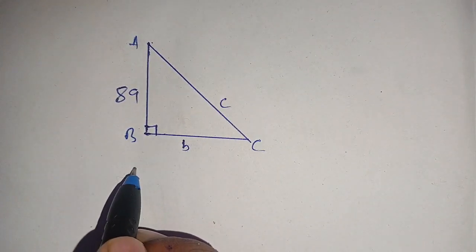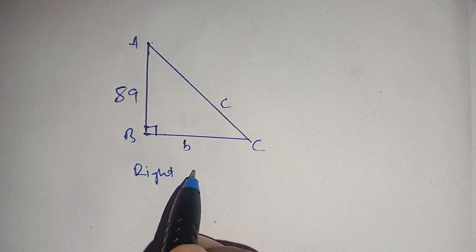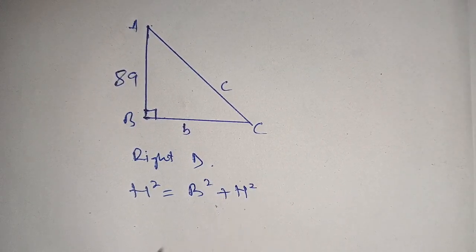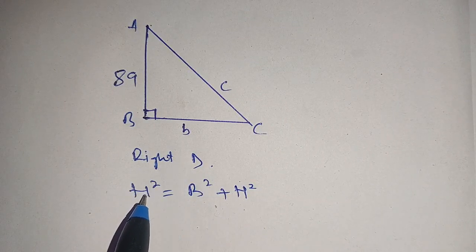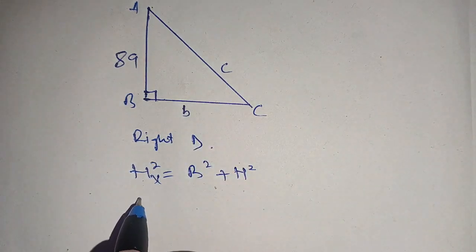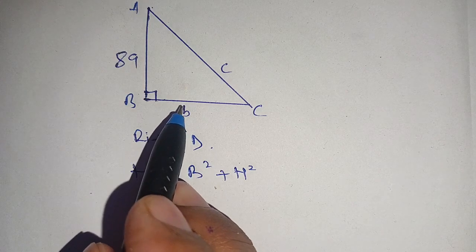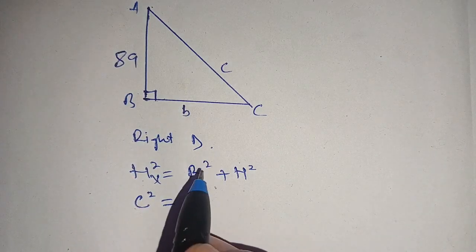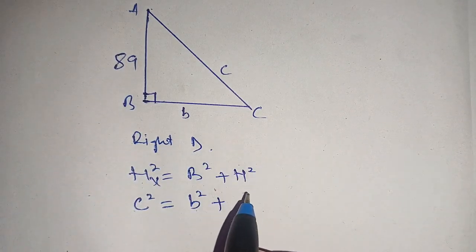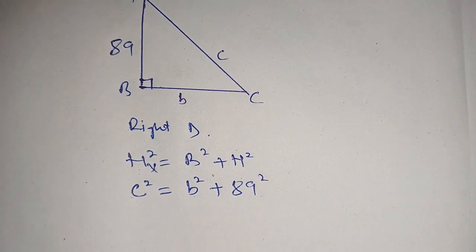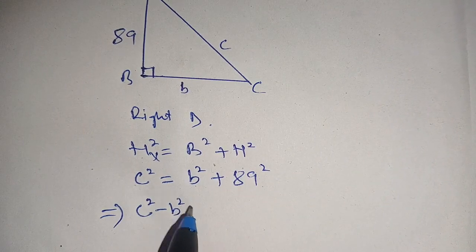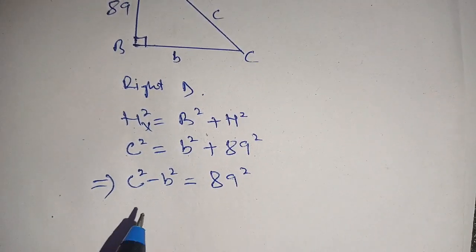By the property of a right triangle, we know that hypotenuse squared is equal to base squared plus height squared. Here we consider the hypotenuse to be c units. Substituting, we get c squared is equal to b squared plus height squared. The height is given as 89 units, so we put 89 squared. When we shift b squared to the left-hand side, it becomes c squared minus b squared is equal to 89 squared.